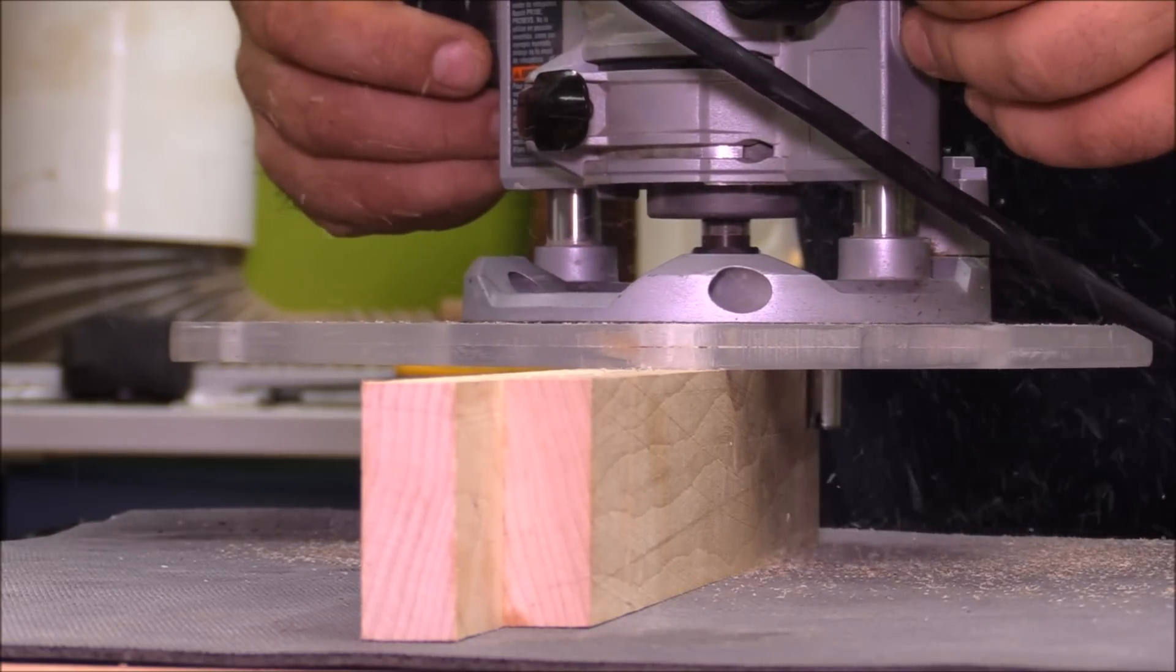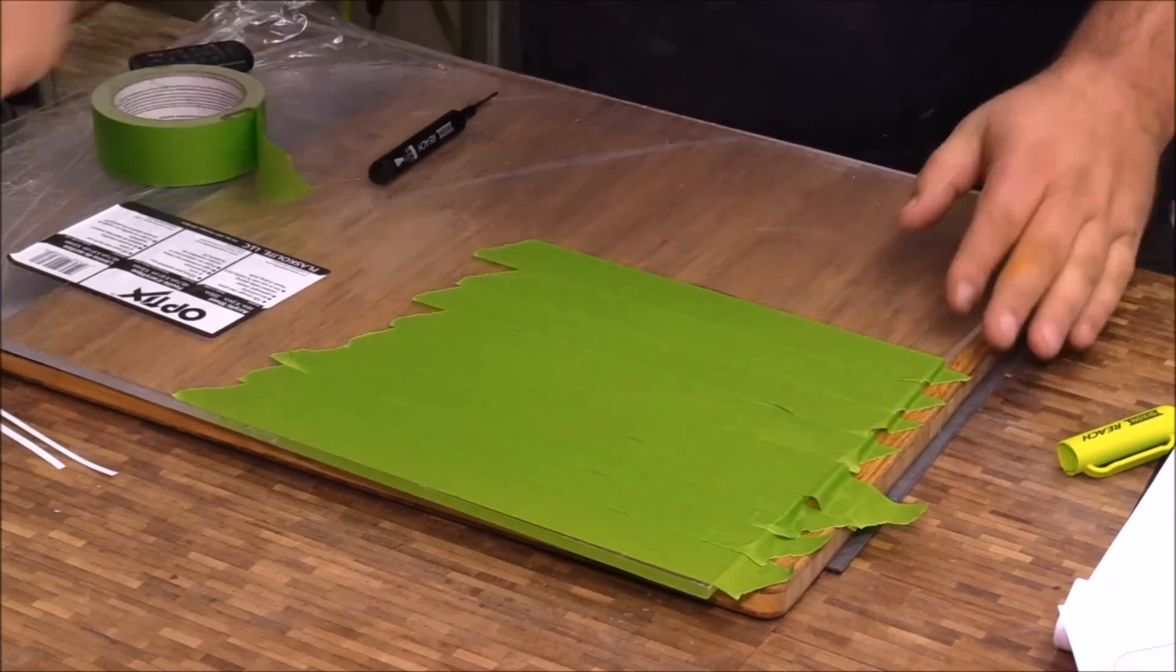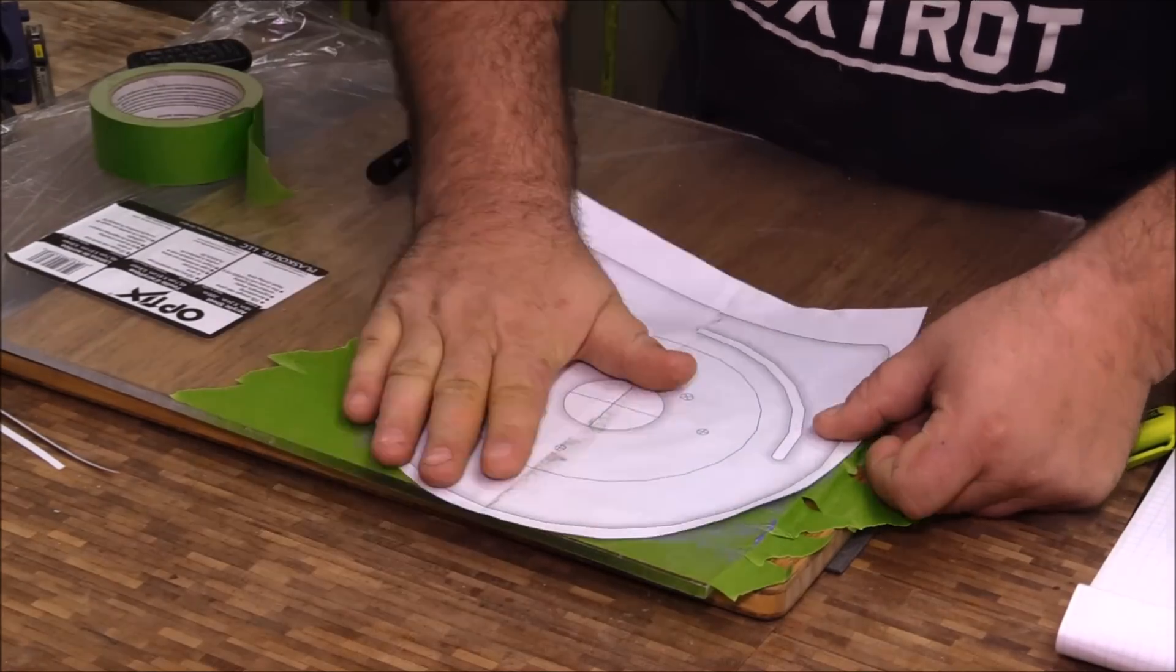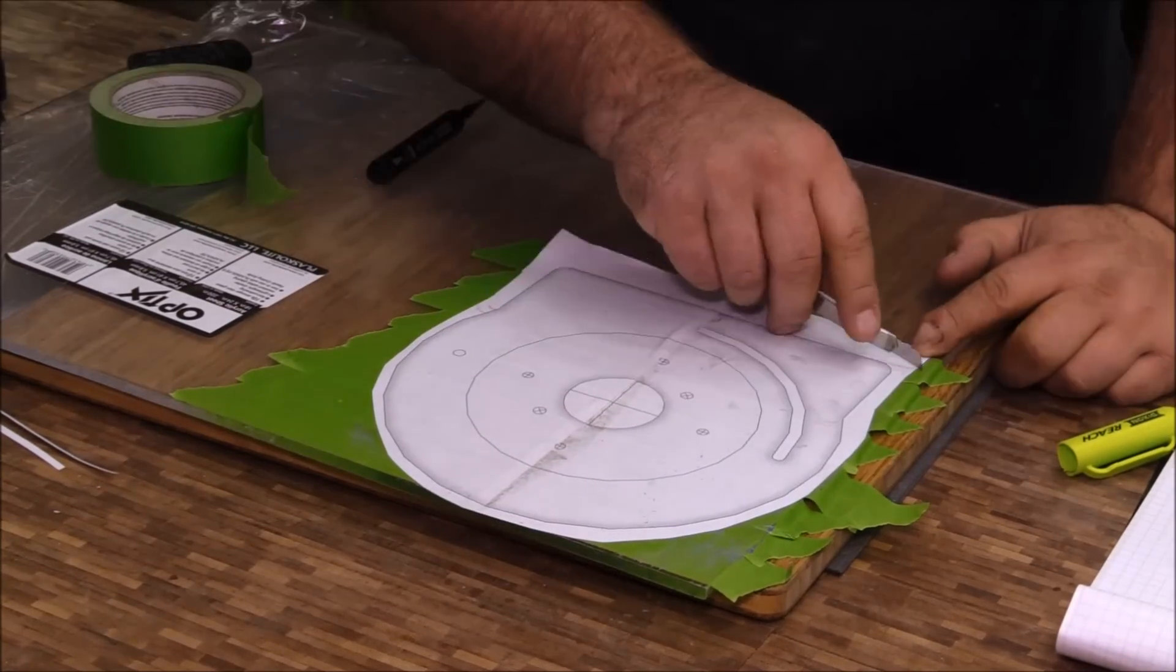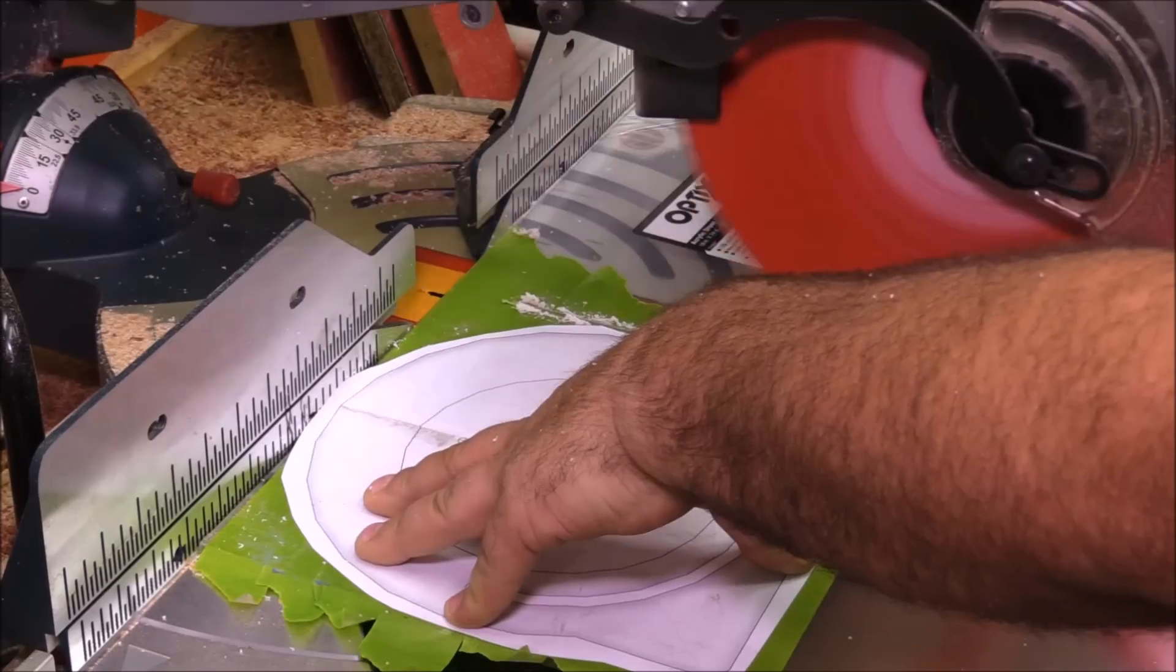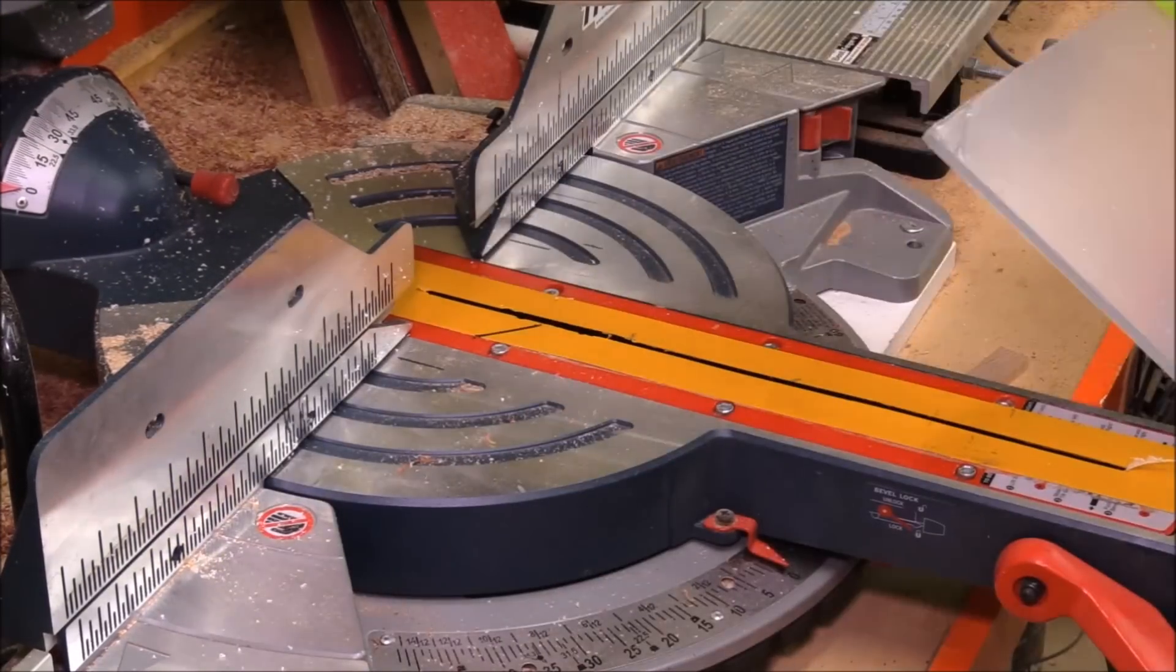I started with some quarter-inch plexi that I picked up from one of the big box stores. That 18 inch by 24 inch piece was right around $20. After prepping the surface with some green painters tape, I added some glue stick to it and then the template over the top of that, and then just cut a rough shape out on the chop saw.